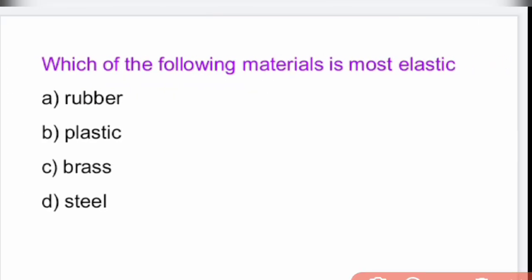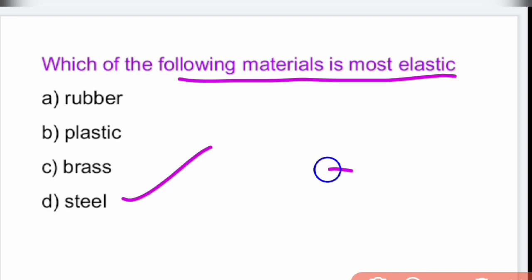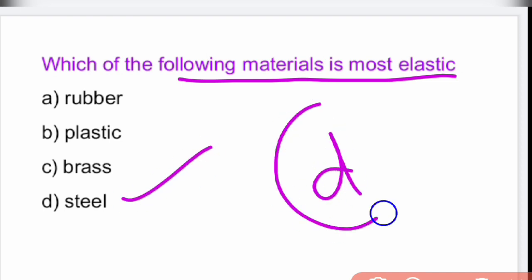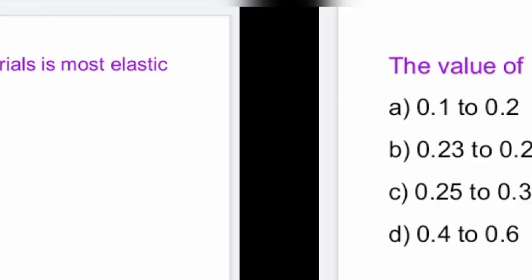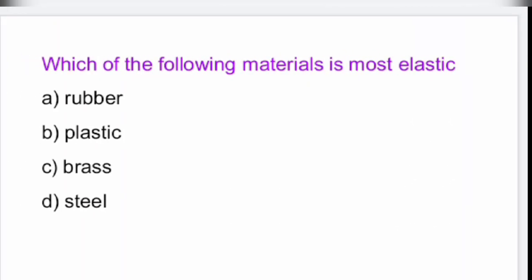Which of the following materials is most elastic? It is steel — option D — because it is a ductile material.